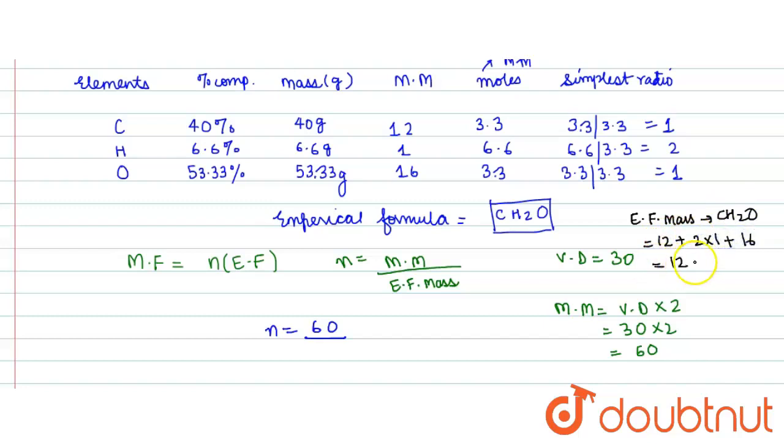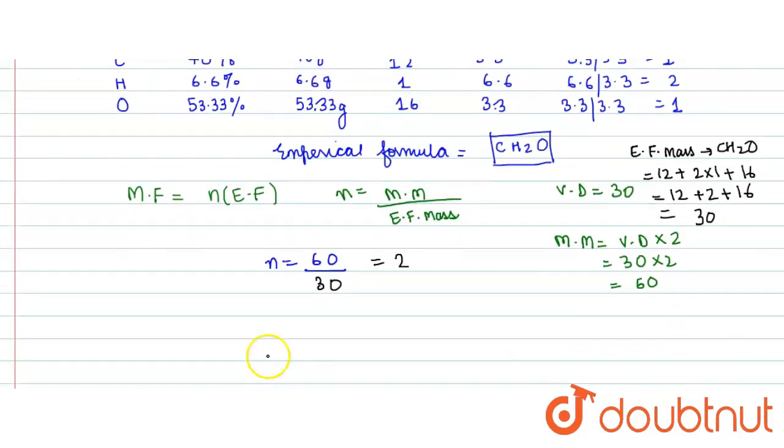Which is equals to 12 plus 2 plus 16, and thus this comes out to be 30. Therefore, n is equals to 60 divided by 30, that is 2. Hence the molecular formula is equal to 2 into empirical formula, that is CH2O, which is equals to C2H4O2.